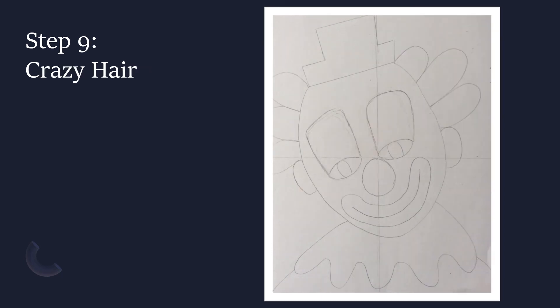Step nine: crazy hair. Next we'll work on the hair — clowns usually have really big, curly hairdos. Starting at the corners of the hat, you'll want to draw three humps on each side of your face, and also ending with a smaller fourth hump to create the clown's ears.